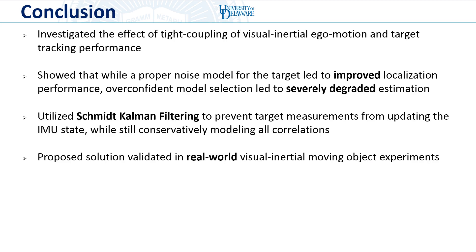In conclusion, we've investigated the effect of tight coupling on visual-inertial ego motion and target tracking performance. We showed that while a proper noise model for the target can improve localization performance over VIO alone, an overconfident model selection can actually severely degrade estimation performance. To protect ourselves from this and to make our estimator more robust, we proposed to leverage Schmidt-Kalman filtering to prevent target measurements from updating the IMU state, while still conservatively and consistently modeling all correlations. Finally, the proposed system was validated in a real-world visual-inertial moving object experiment. Thank you.